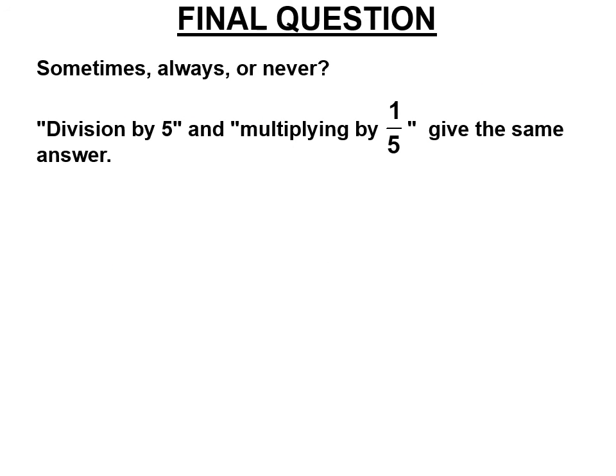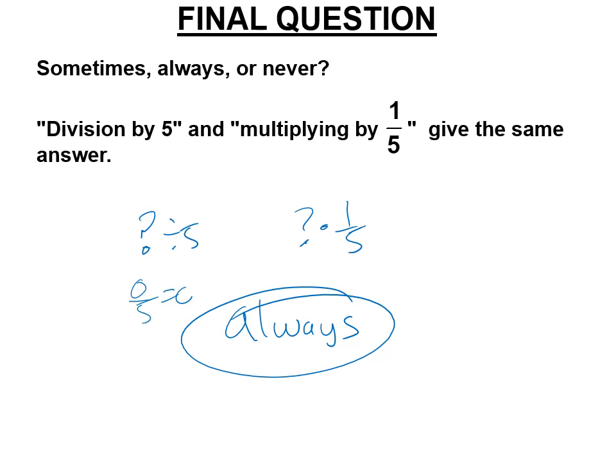Division by 5. Dividing some number, any number, divided by 5 and multiplying by 1 5th always gives the same answer. And the answer to that is always. Alright, they always do. Okay. And if you're thinking about 0, which would be a good, if you were thinking about a sometimes, you should think about 0. Right? 0 divided by 5, that equals 0. That's not the one that's undefined. 0 in the front is allowed. And 0 times 1 5th is also 0. So that would be the one I would check. Is that also always true? Yes. Division by 5 and multiplying by 1 5th always give the same answer.